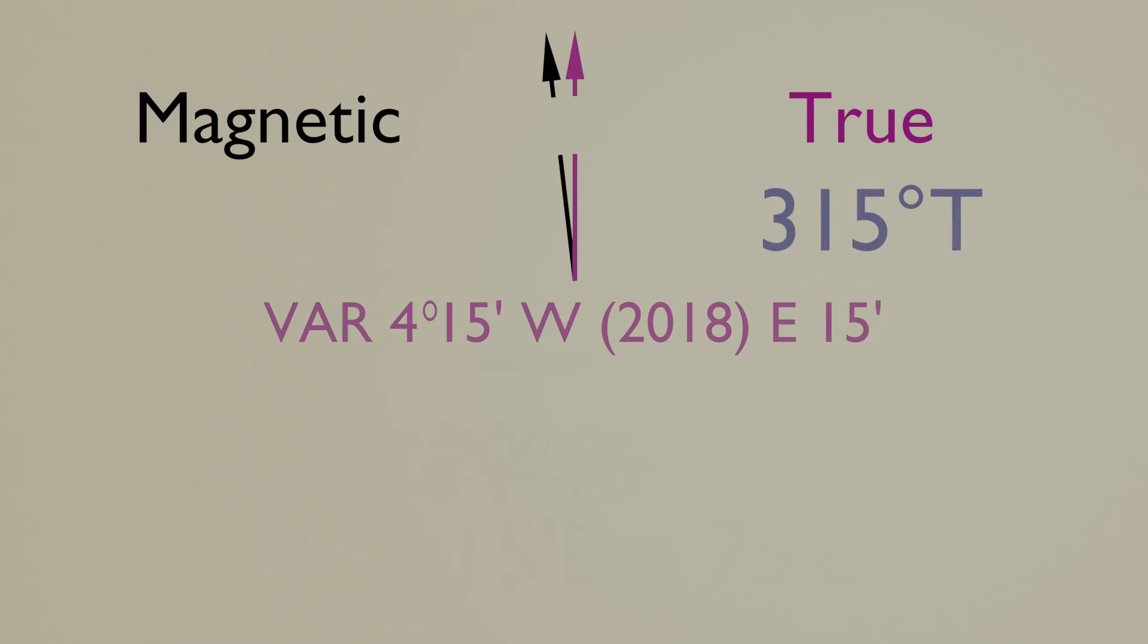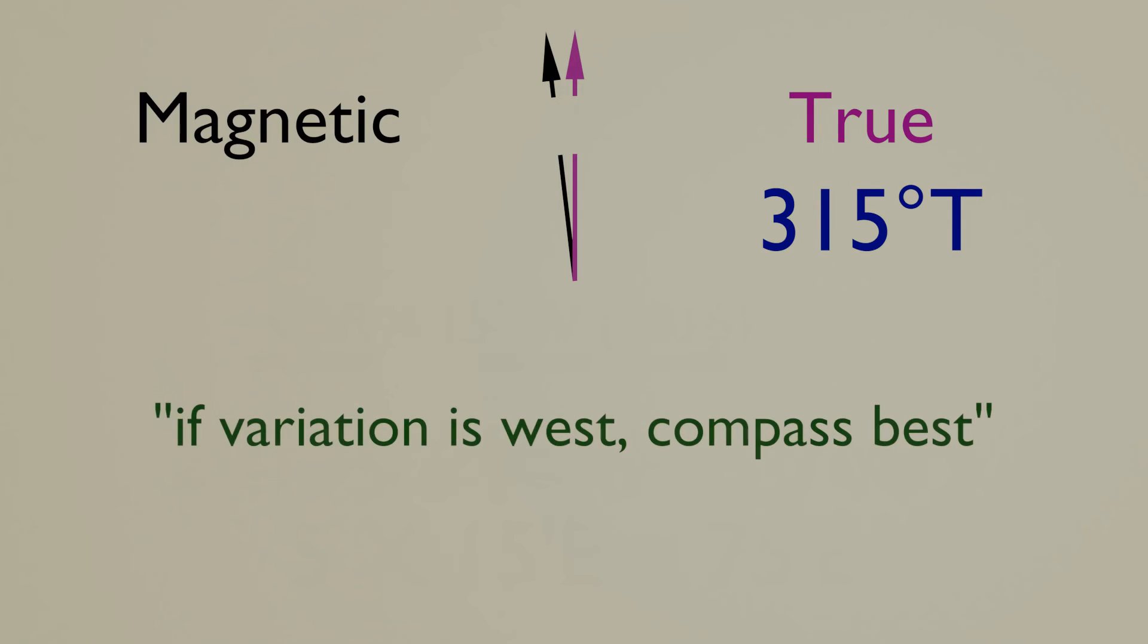Stay with me, people. Well, if our original heading was 315 true, how do we convert this to a magnetic bearing? Here we will have to try and remember a little rhyme. If variation is west, compass is best. If variation is east, compass is least. As our variation is west, we will need to work on the compass is best, which means that our magnetic reading should be greater than our true reading. We add our variation to our true bearing, which gives us a magnetic reading of 318 degrees.